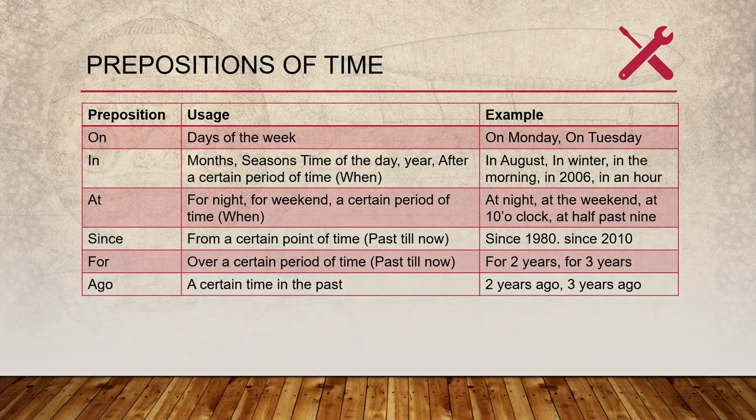Prepositions of time: we have 'on,' which is used with the days of the week, like on Monday, on Tuesday. 'In' is used with months, seasons, time of the day, year, or after a certain period of time — for example, in August, in winter.